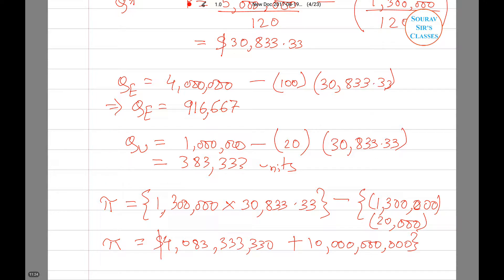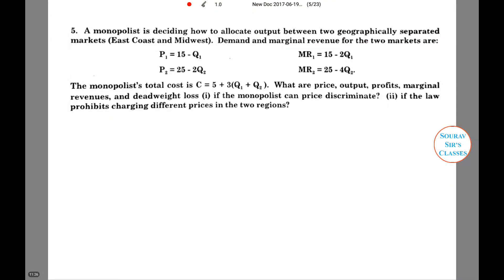Moving on to the next question: a monopolist is deciding how to allocate output between two geographically separated markets — the East Coast and the Midwest. The demand and marginal revenue for the two markets are given. The monopolist's total cost curve is C equals 5 plus 3(q1 plus q2), so the marginal cost has a slope of 3.